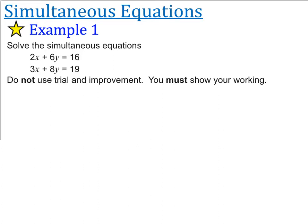Do not use trial and improvement means don't guess a number, like let's guess x is equal to 1, and then find out how much y is and see if that works. They don't want us to do that. They want us to solve this using actual algebra. Alright, here we go.